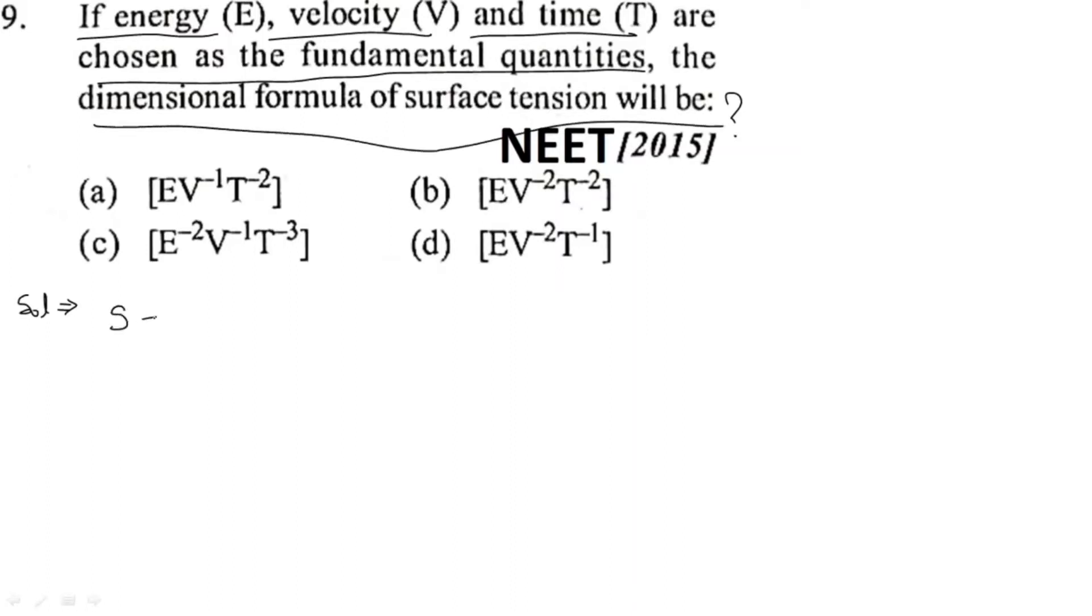As we know that surface tension has the formula of force upon length, that means we can calculate the dimension of surface tension. That would be ML T⁻² upon L. Now the resultant would be M¹ T⁻².